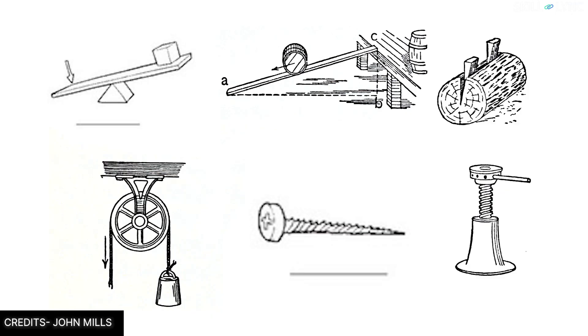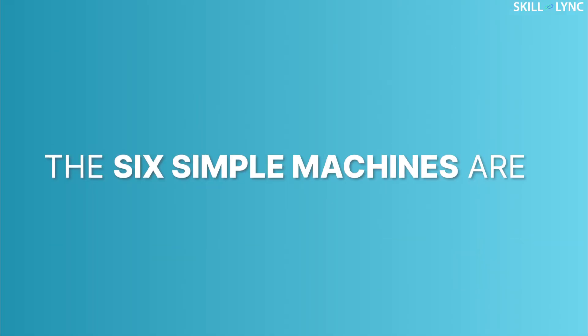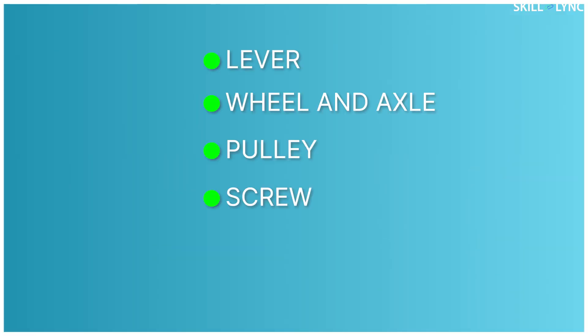Wedges are one of the six simple machines that all of us would have learned in our primary schools. The six simple machines are lever, wheel and axle, a pulley, a screw, an inclined plane, and a wedge.